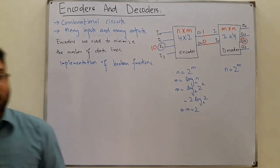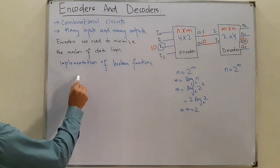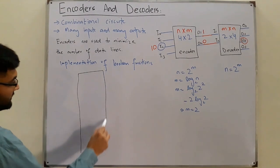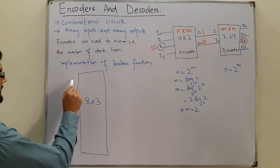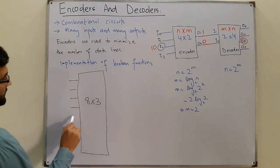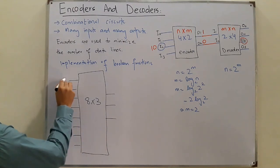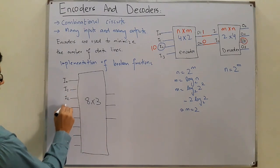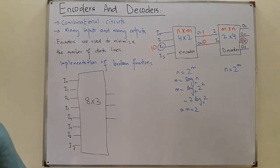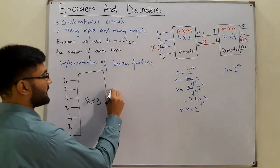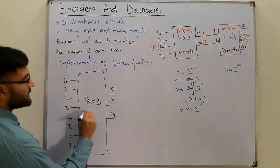Similarly, we can have a higher-order example: an 8-input encoder. With 8 inputs (i0 through i7), we get three output lines. So this is an 8×3 encoder, with outputs o1, o2, and o3.